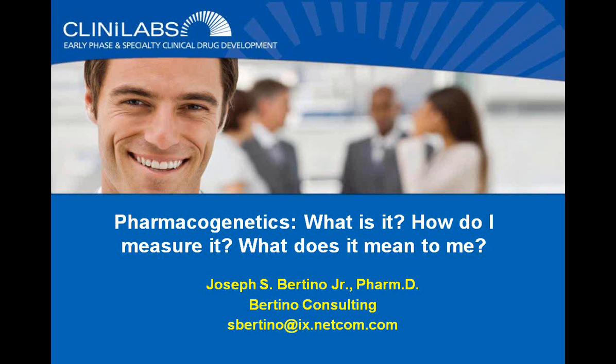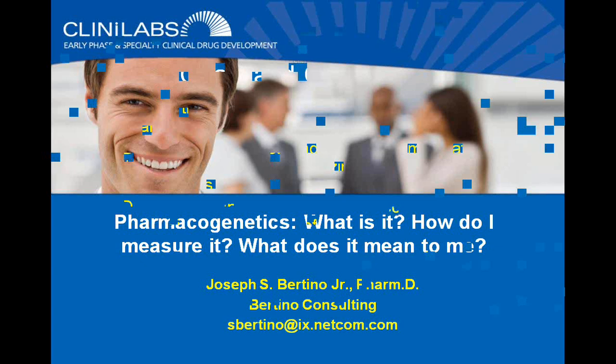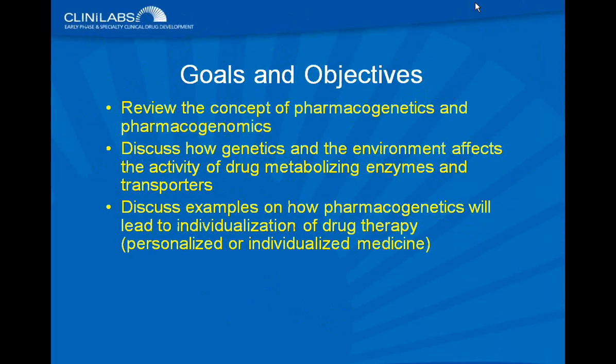Our topic today is entitled Pharmacogenetics: what is it, how do I measure it, and what does it mean to me? If you have questions during or after the presentation, you can type them into the question box on the screen, and they will appear on my computer screen. I'll try to answer them and repeat the question so everybody knows what was asked. Our goals and objectives are to review the concepts of pharmacogenetics and pharmacogenomics, to discuss how genetics and the environment affect drug metabolizing enzymes and transporters, and to discuss examples of how pharmacogenetics will lead to individualization of drug therapy — also called personalized or individualized medicine.